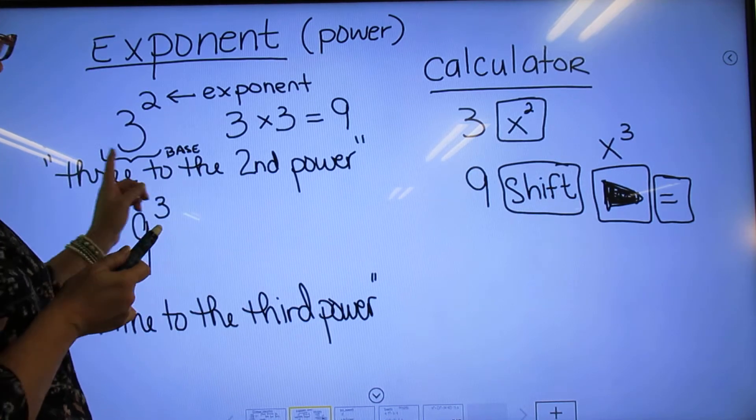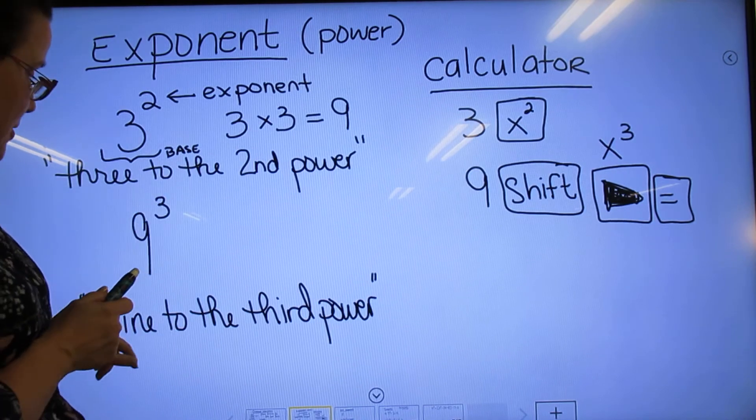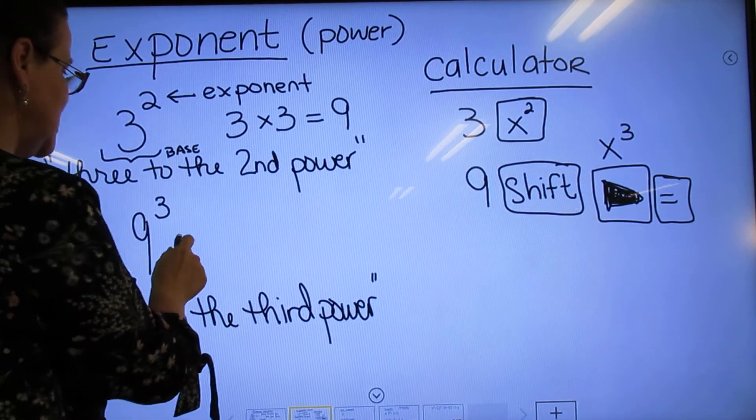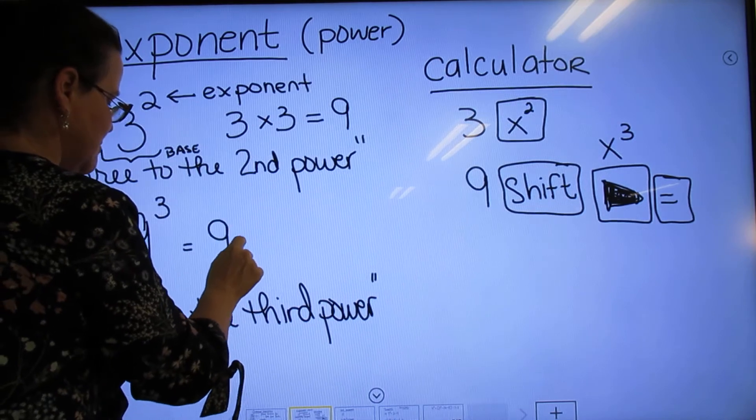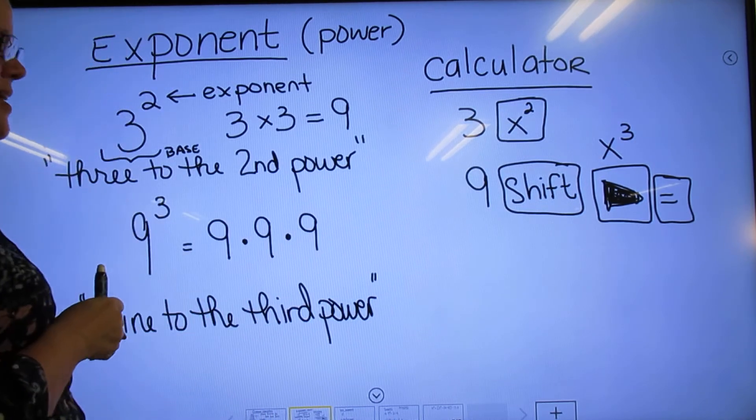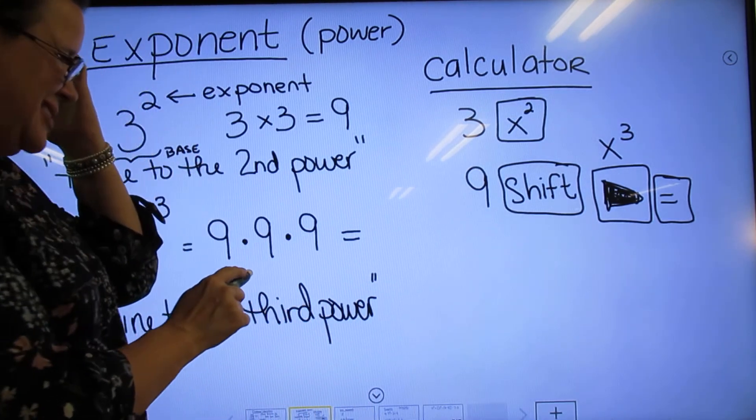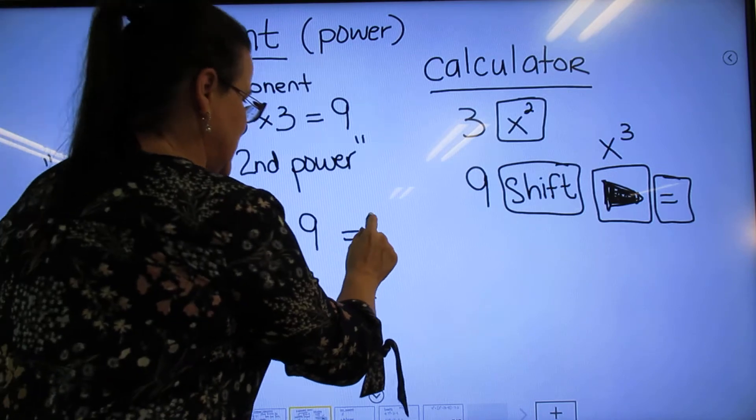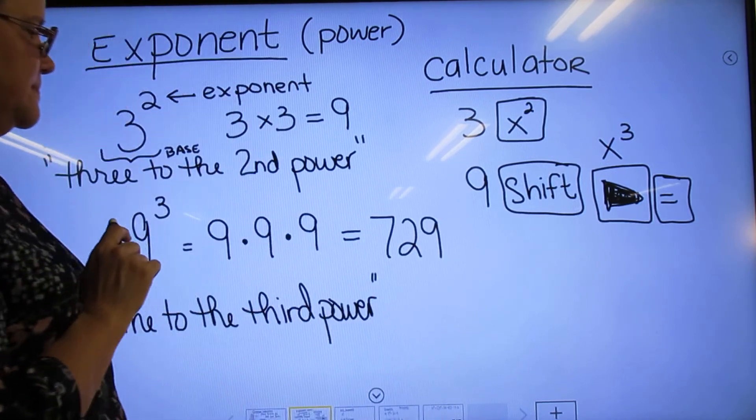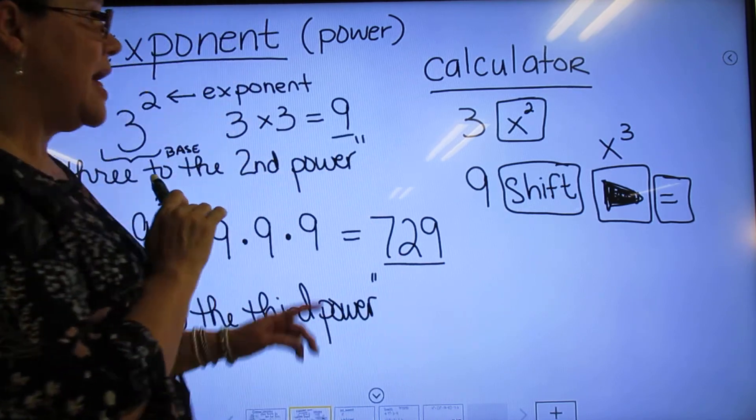You'll hear me say 3 squared a lot, but 3 to the second power is good. 9 to the third power means you're going to multiply that 3 times. 9×9 is 81, and 81×9 is 729. I did that in my head real quick. So those are your answers.